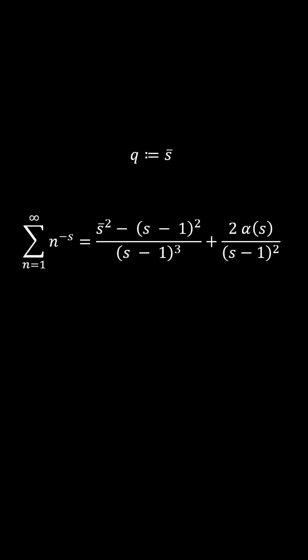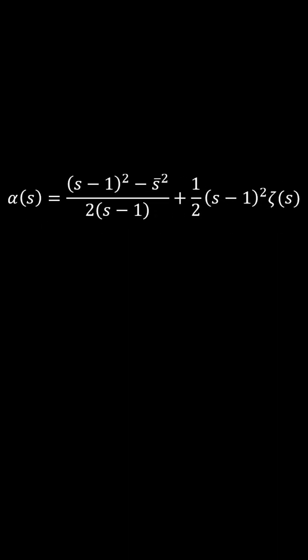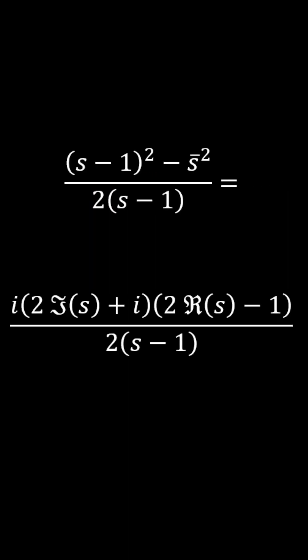The relationship then between alpha and eta is as shown here, such that the first term will only ever be zero when the real part is one half.